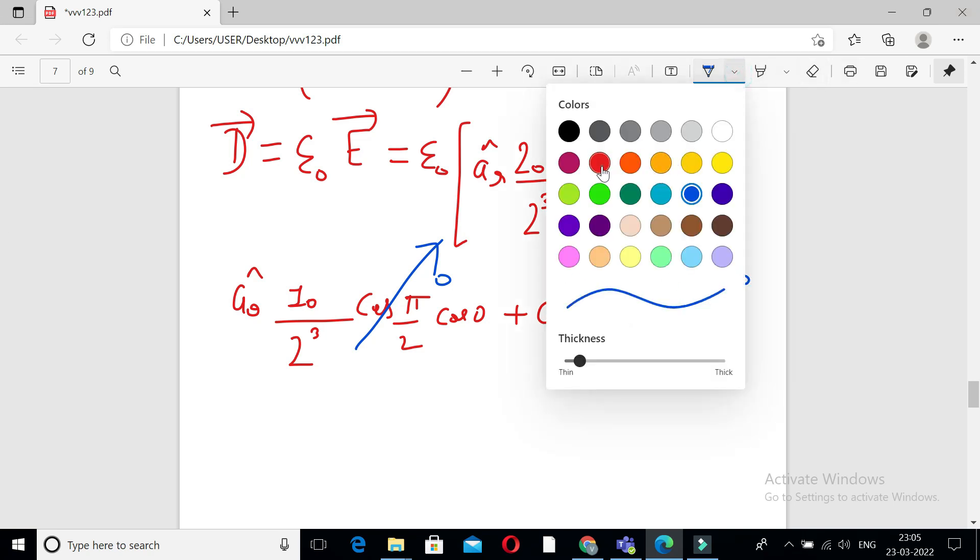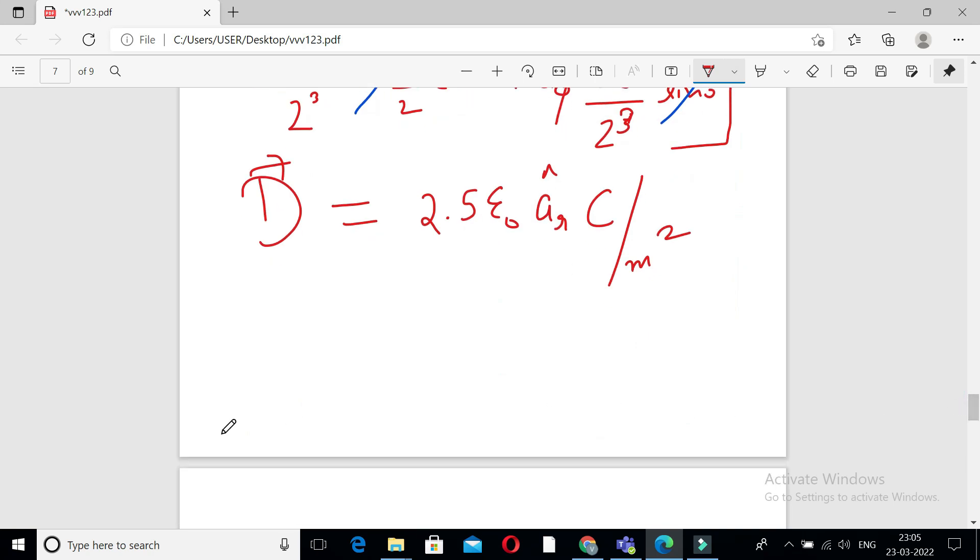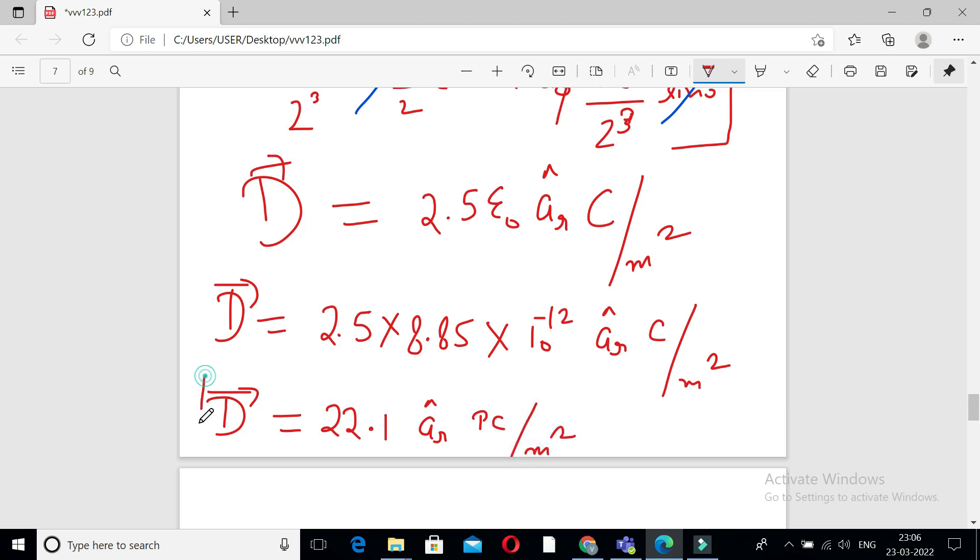Finally, vector D is equal to 2.5 epsilon naught A R cap coulomb per meter squared. Vector D is equal to finally 2.5 times 8.85 times 10 to the power minus 12 A R cap. After solving we get 22.1 A R cap picocoulomb per meter squared.